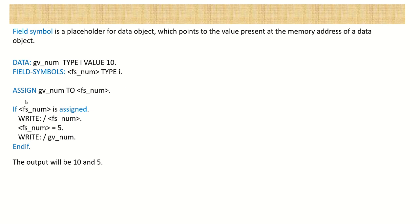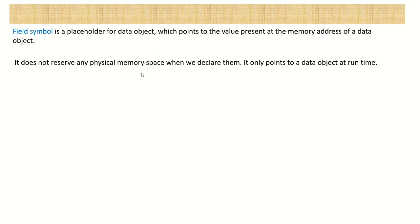We can assign this variable to the field symbol. The field symbol doesn't reserve any memory — memory is consumed only by the data object. Once we assign a variable and print the field symbol value, it will automatically print the value assigned to that variable. And once assigned, if we change the value of the field symbol, this works in a two-way manner — the new value will automatically get assigned back to the variable. Field symbol only points to the data object at runtime; it does not reserve any memory space.